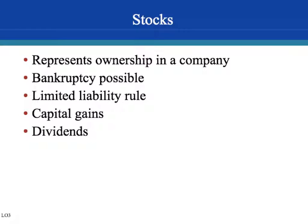Stocks are usually the riskiest asset anyone can buy. When you buy a stock, you are part owner of a company — so if you buy Coca-Cola stock, you are part owner in Coca-Cola, even if it's 0.001% ownership. Firms do go bankrupt — we saw that in the Great Recession of 07-08 and in the dot-com bubble burst in 2001.